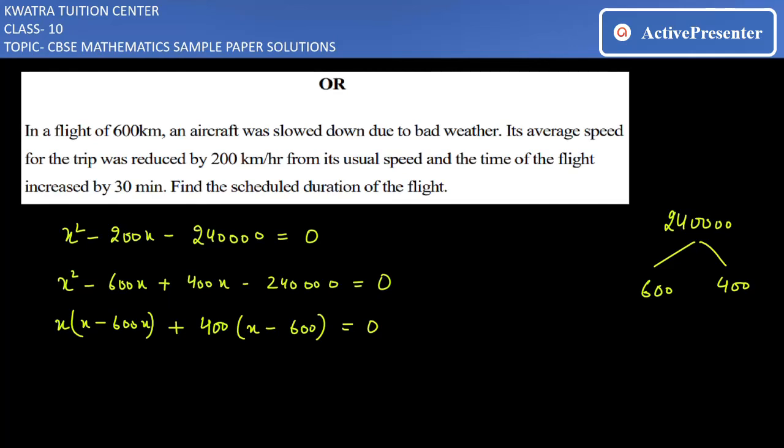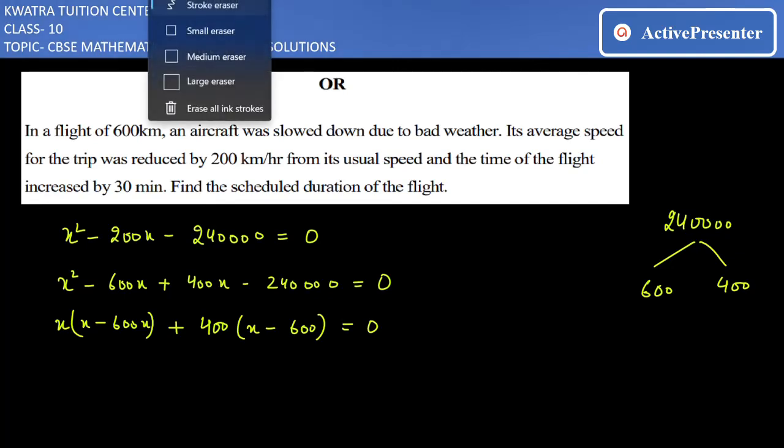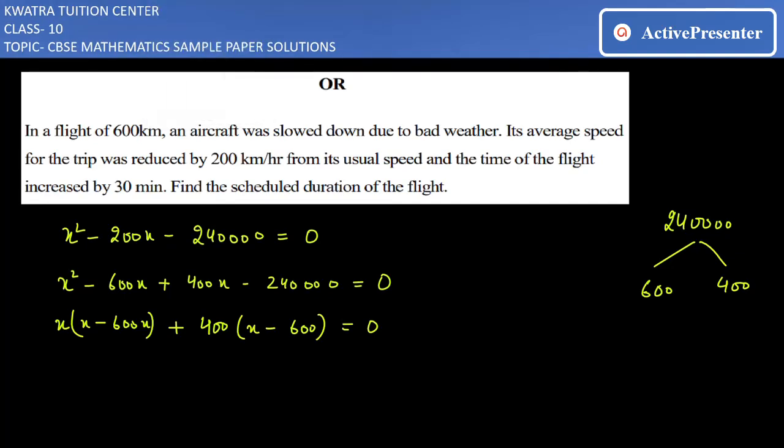Now you have two factors: one is x minus 600 and other is x plus 400. So x is 600 first of all, and the second one is minus 400. You have x as 600 and x as minus 400.